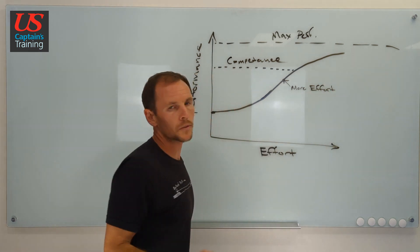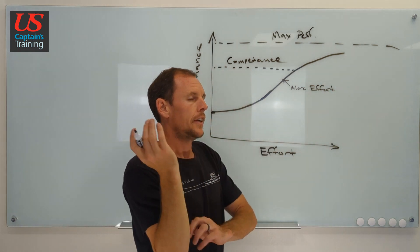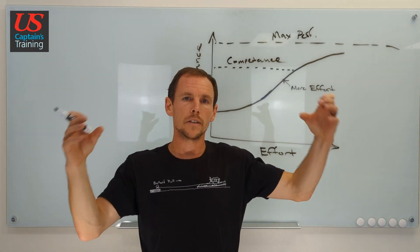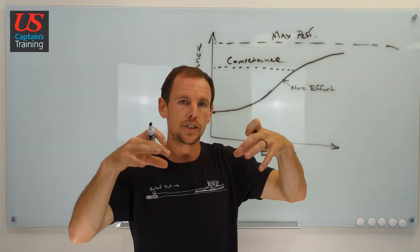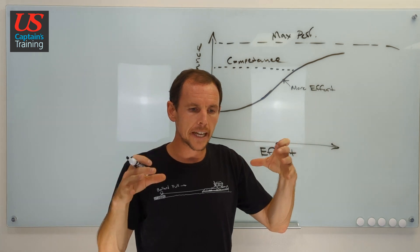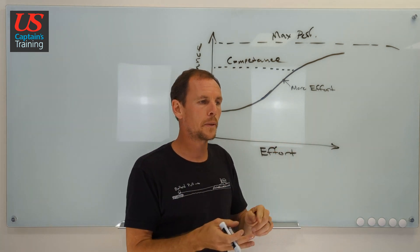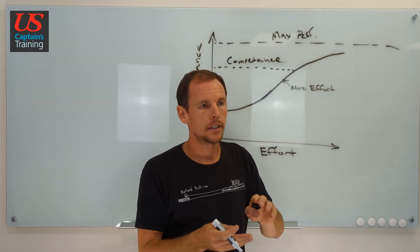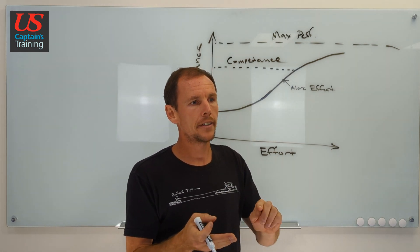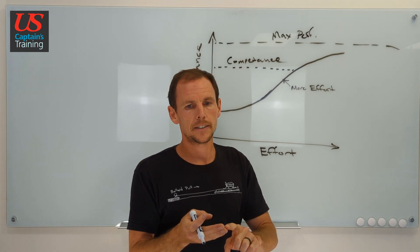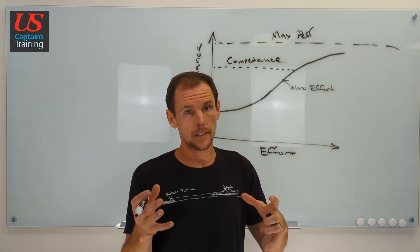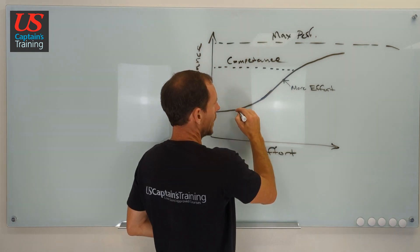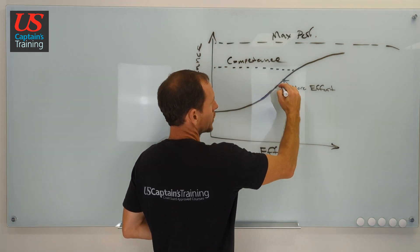So the rules of the road is a great example. You have the rules, you have the sounds, you have the lights, you have the day shapes, and it's all coming together, but it always goes in a certain order. People get crossing situations and head on and overtaking. Those come first. And then you start to get into the lights and the lights are harder, but you're over here. You're learning a lot. You're learning sound, light shapes right in here.